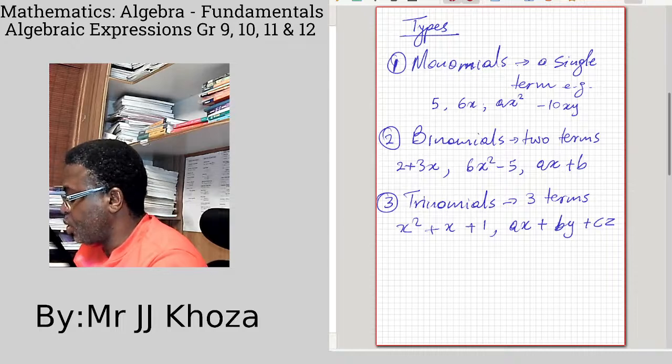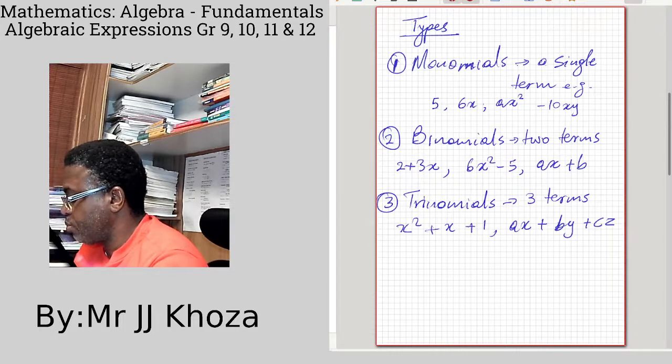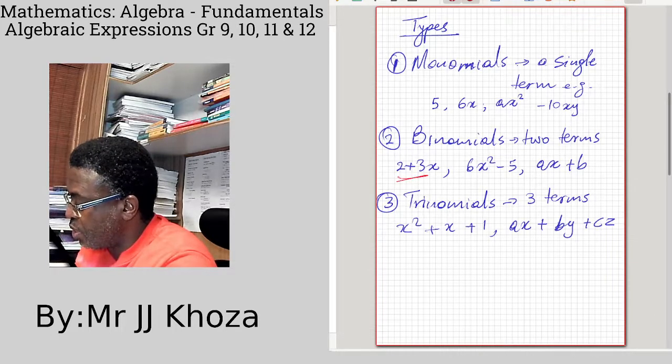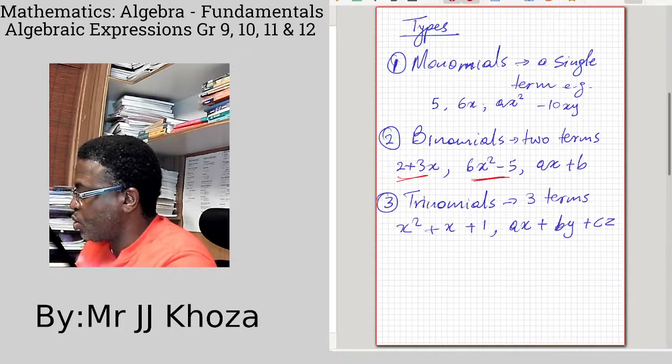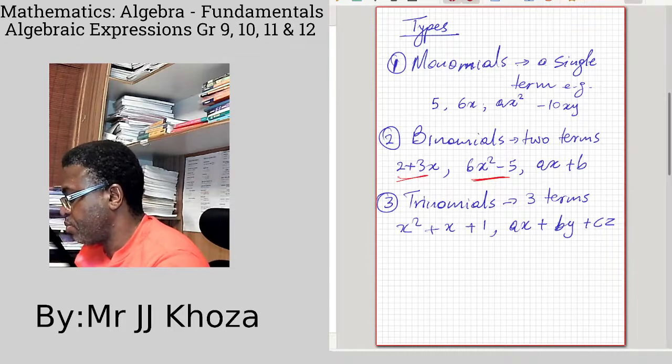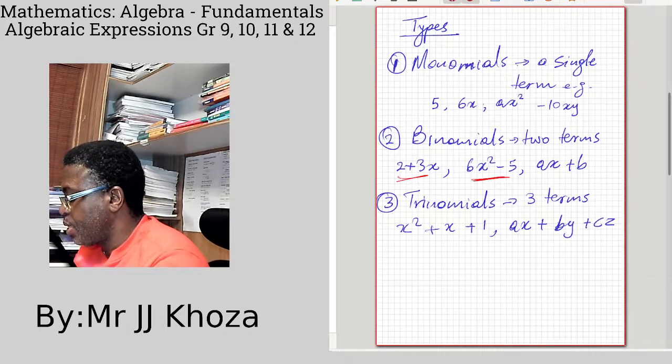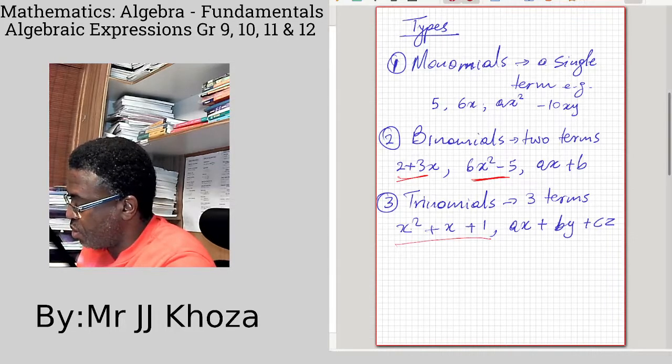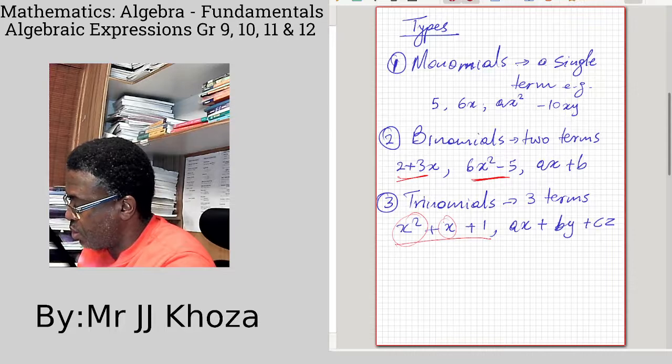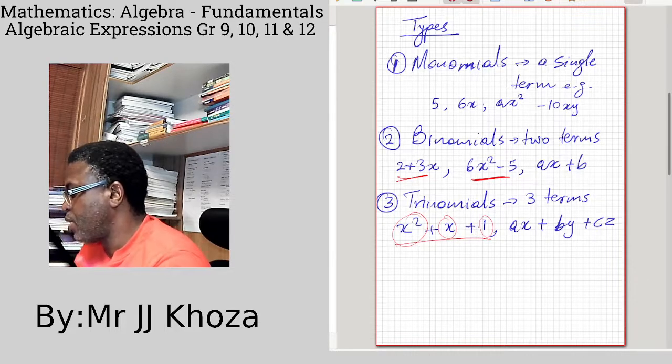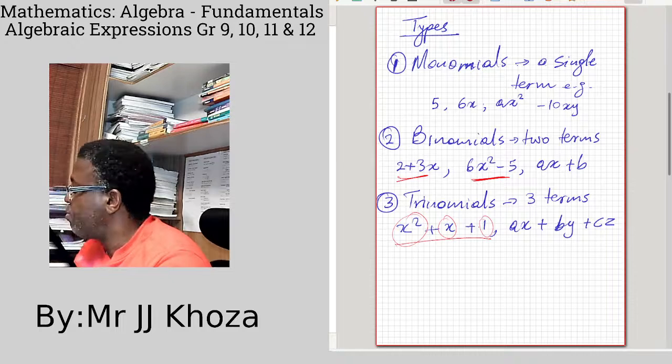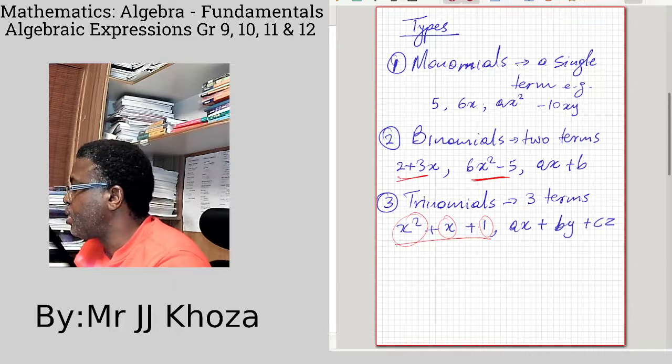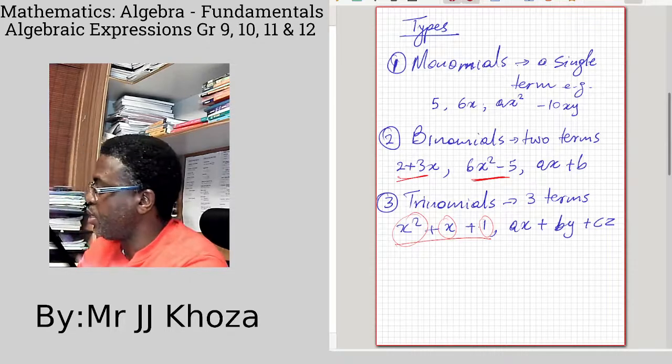Binomial: these are two terms, like what we see here: 2 plus 3x, 6x squared minus 5. Thirdly, trinomial: these are three terms separated by plus or minus. If it's a multiplication or a division, you consider that as a single unit, as a single term.